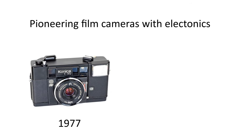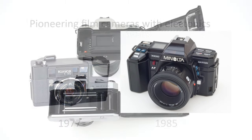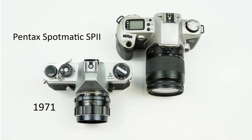Part two of this series highlighted the first autofocus point-and-shoot camera, the Konica C35AF from 1977, and the first mass-market SLR with an integrated camera-lens autofocus system, the Minolta Maxim 7000 launched in 1985. After this, manufacturers designed film cameras packed with electronic tools to help the photographer. Electronics were used to improve how film was advanced and shots counted, and point-and-shoot cameras had electronically controlled zoom lenses. Cameras could also display information electronically on the top, through the viewfinder, or on displays on the back.